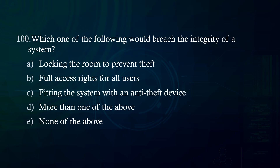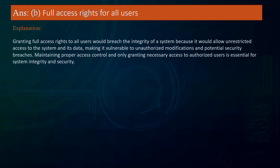Which one of the following would breach the integrity of a system? A. Locking the room to prevent theft. B. Full access rights for all users. C. Fitting the system with an anti-theft device. D. More than one of the above. E. None of the above. Answer: Full access rights for all users. Explanation: Granting full access rights to all users would breach system integrity by allowing unrestricted access, making the system vulnerable to unauthorized modifications and security breaches. Proper access control is essential for security.